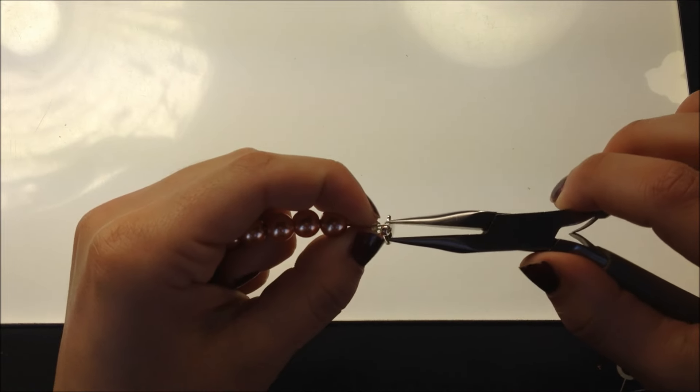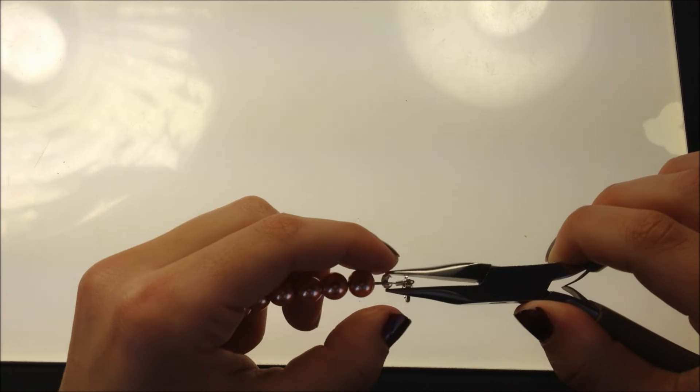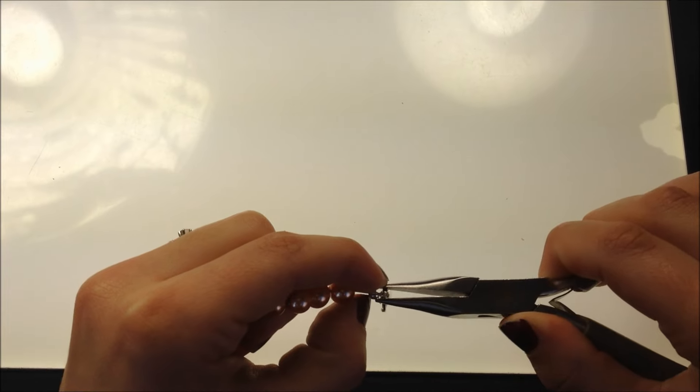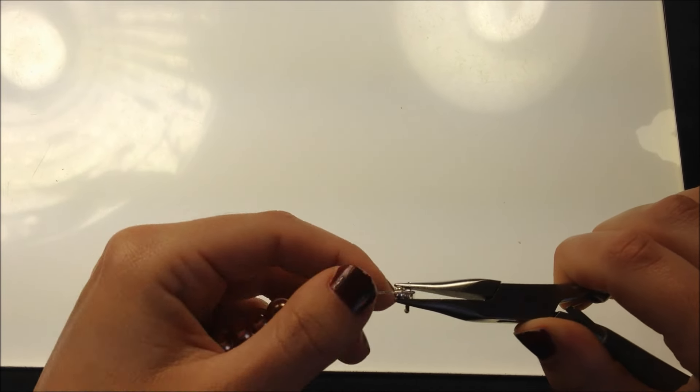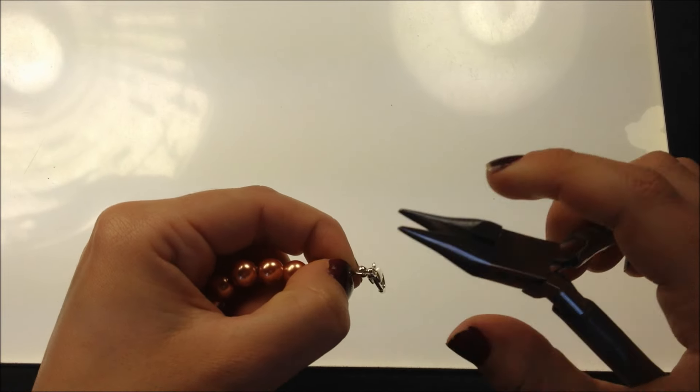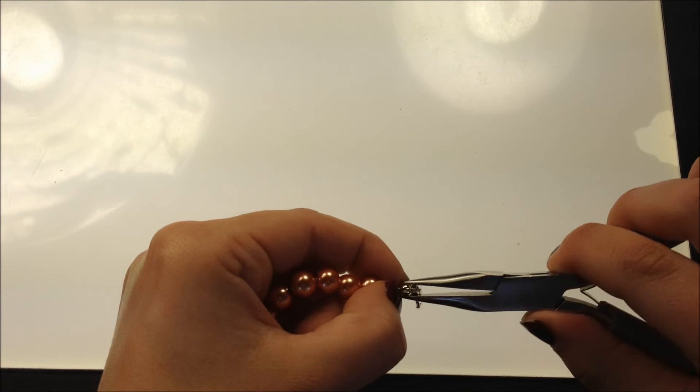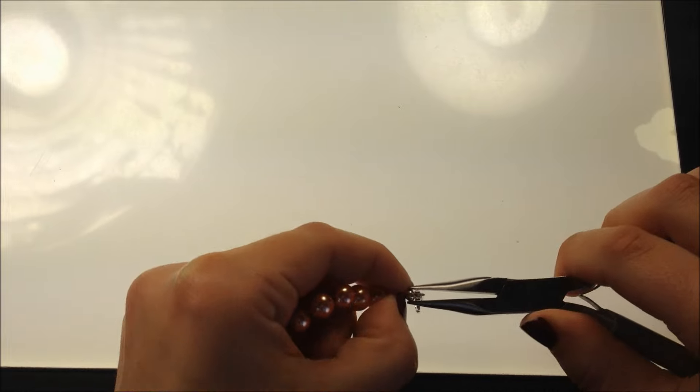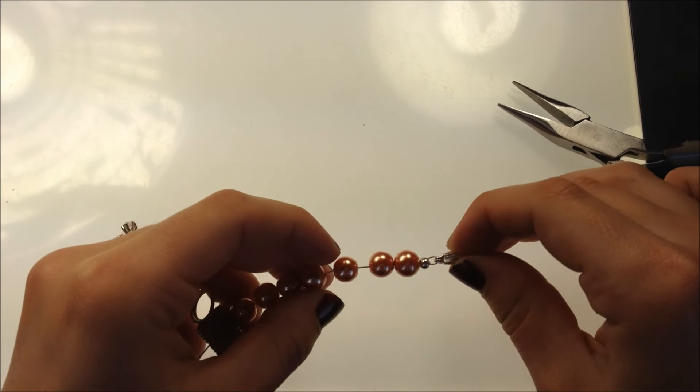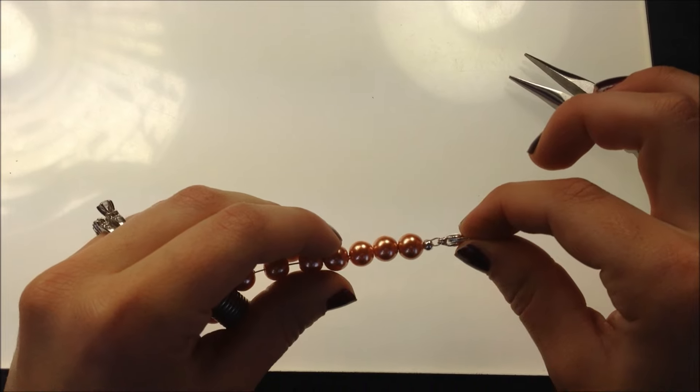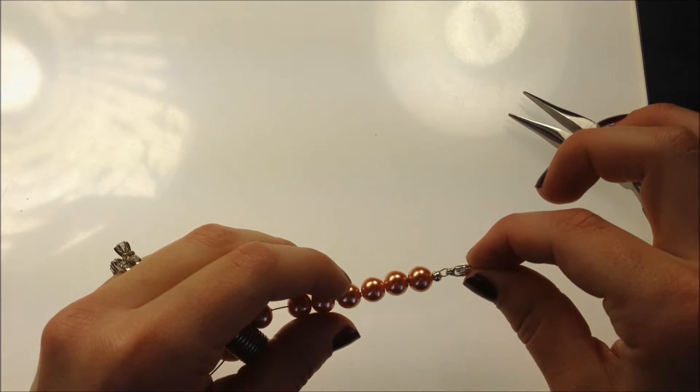Once you have it situated over top of your crimp bead, you're going to take your flat nose pliers and slowly squeeze it so that it starts to close and the two ends touch each other. Then what you have looks like a little silver bead. That's how you do a basic flat crimp with a crimp cover.